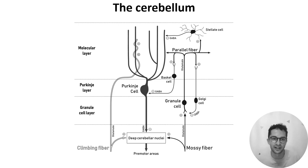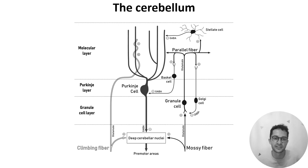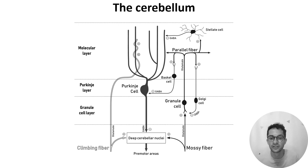The Purkinje cells then send inhibitory connections to the circuit's outputs — the deep cerebellum nuclei. In a second pathway on the left, the climbing fiber pathway, other inputs skip straight to the Purkinje cells. You can also see that there are other interesting connections in the circuit, like direct connections from both pathways straight to the outputs — from the mossy and climbing fibers straight to the deep cerebellum nuclei.